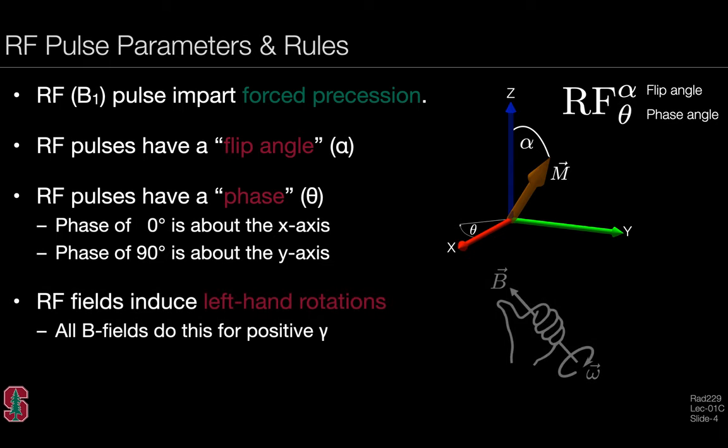RF fields induce left-hand rotations, and all B fields do this for positive gamma, whether it's B0, B1, or something else.